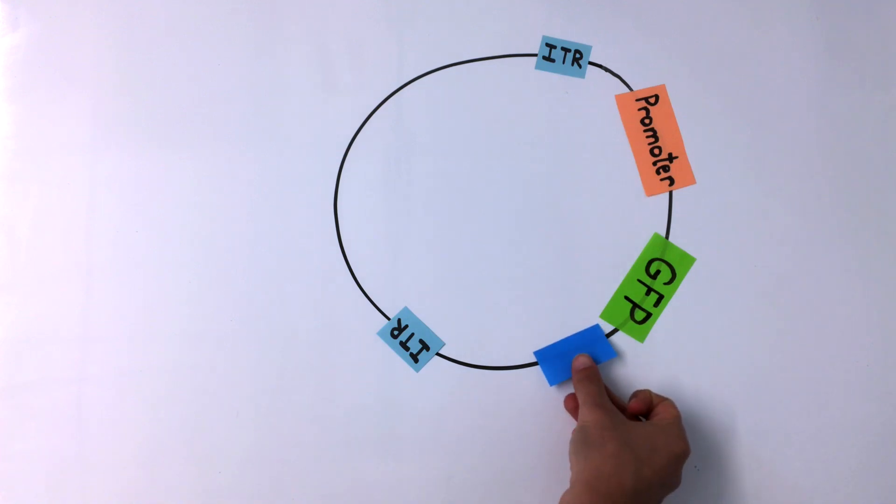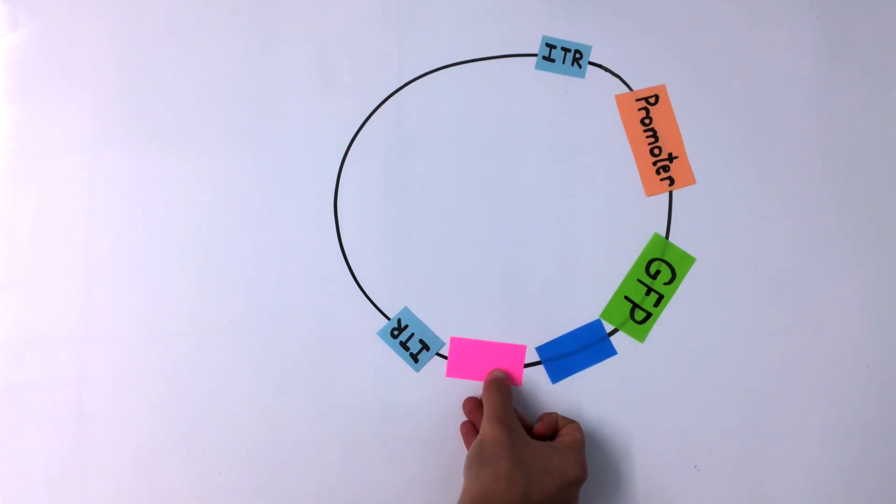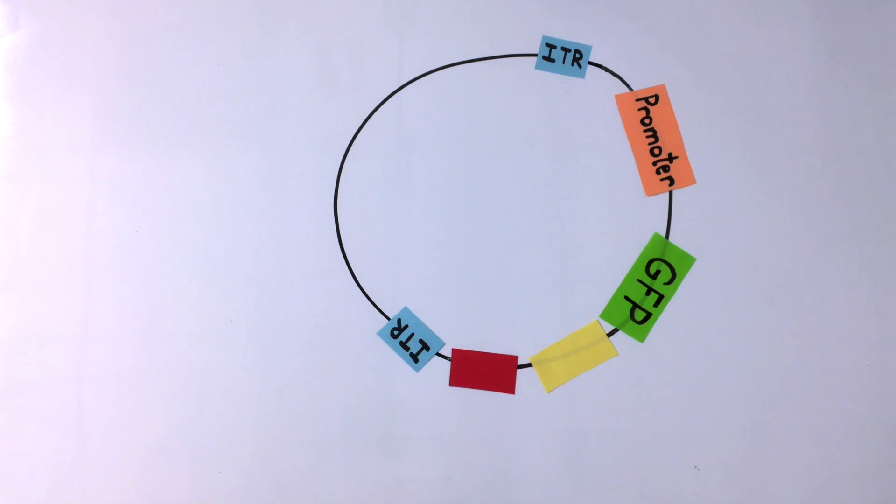Now I'm going to talk about some of the elements that aren't required for AAV transfer plasmids, but that you'll often see in them. I'll also describe what these elements do and how they might affect the activity of the AAV vector.